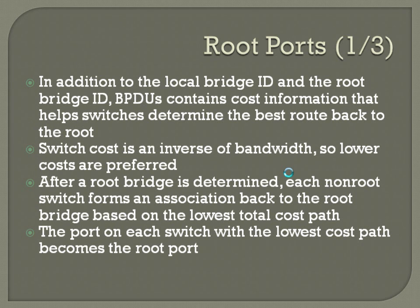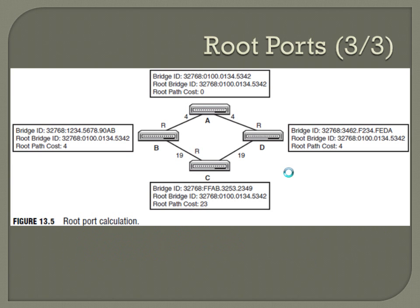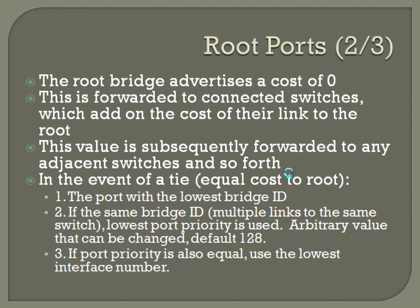In addition to the local bridge ID and root bridge ID, BPDUs contain cost information that helps switches determine the best route back to the root. Switch cost is an inverse to bandwidth, so lower costs are more preferred, kind of like with OSPF. After a root bridge is determined, each non-root switch forms an association back to the root bridge based on the lowest total cost path, and the port with the lowest cost path becomes the root port. The root bridge advertises a cost of zero, which is forwarded to connected switches, which add the cost of their link. That value is subsequently forwarded to any adjacent switches and so forth.